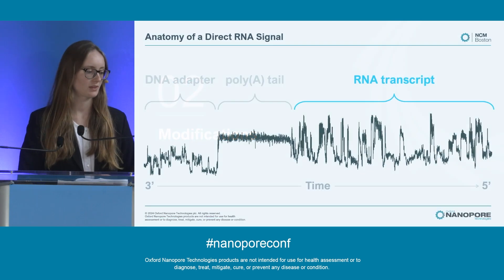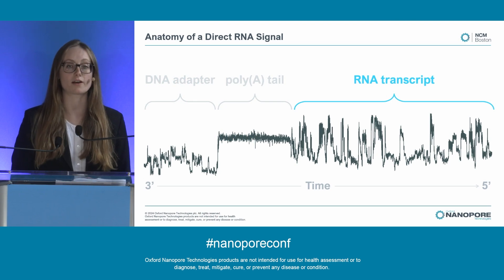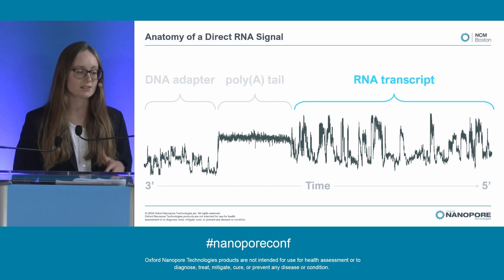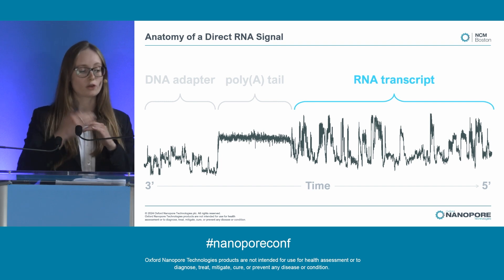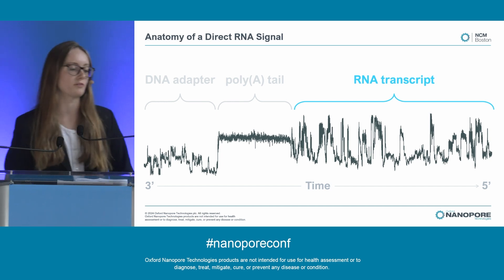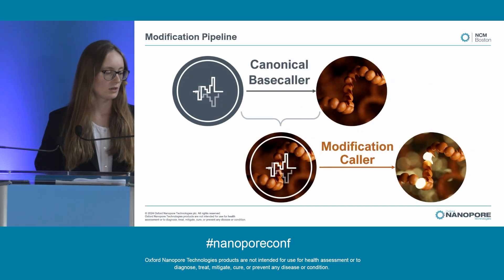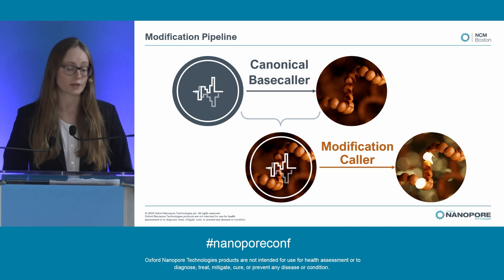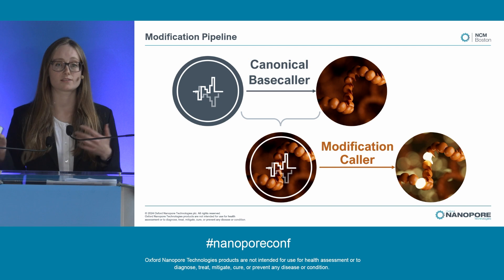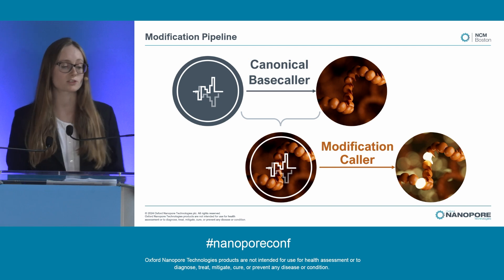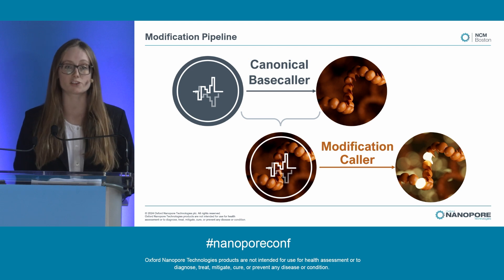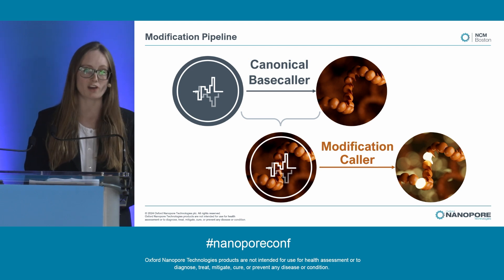Next, modifications. So now we're looking at the RNA transcript part of the signal. This is where you get all four RNA bases, and you can see a much wider range of amplitudes as you have all the different bases and modified bases moving through the pore. The pipeline for this starts with a canonical base caller that takes the signal and turns it into sequence. Then you combine the signal and sequence together to pass to the modification caller, which can identify where in the sequence you have modifications.